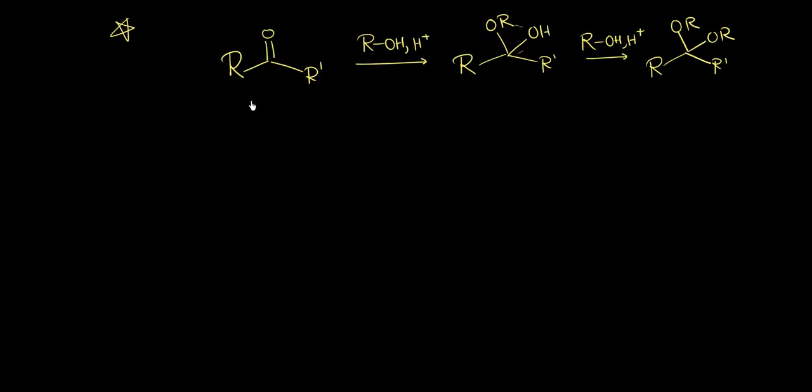Hello guys, in this video we're going to understand how acetals and hemiacetals are formed using aldehydes and ketones. So let's start. In this reaction we have a ketone. We can also take an aldehyde as well. So this ketone reacts with an alcohol.